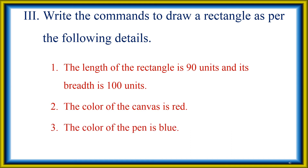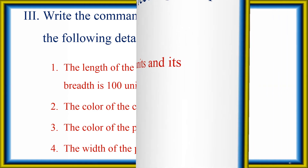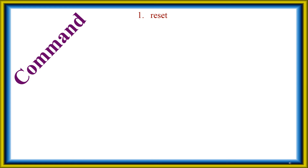The third detail is the color of the pen is blue. The fourth detail is the width of the pen is 5 units. So the commands are: reset, then canvas color. The canvas color red uses RGB value 255-0-0.